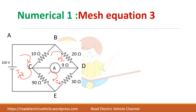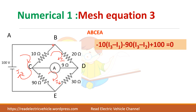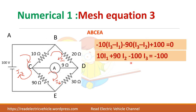Now take the third loop A-B-C-E-A, starting from point B. Write minus 10·(I3 minus I1), since we are writing for the third loop, I3 comes first. Then minus 90·(I3 minus I2). Here there is a voltage source, and current I3 flows from the negative terminal to the positive terminal, so take it as plus 100. Set equal to 0 and simplify to get the third equation.